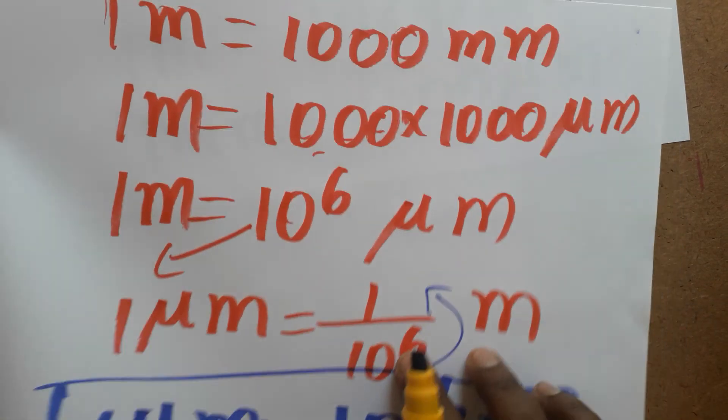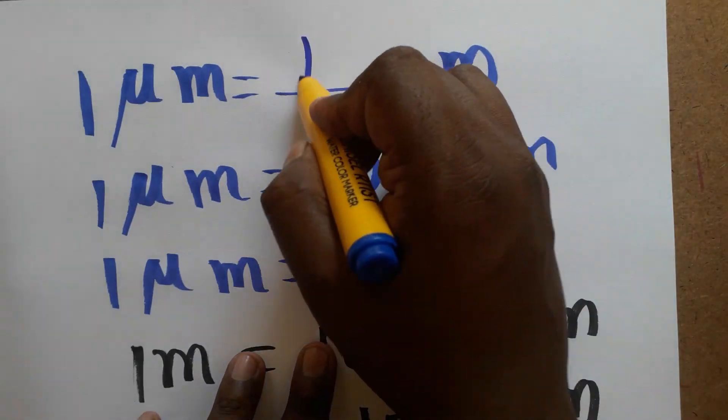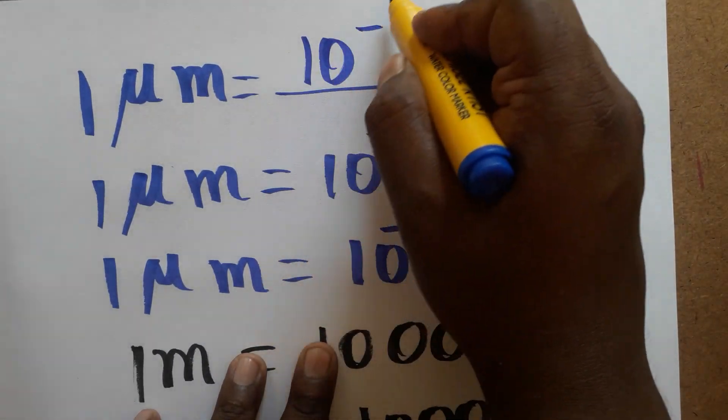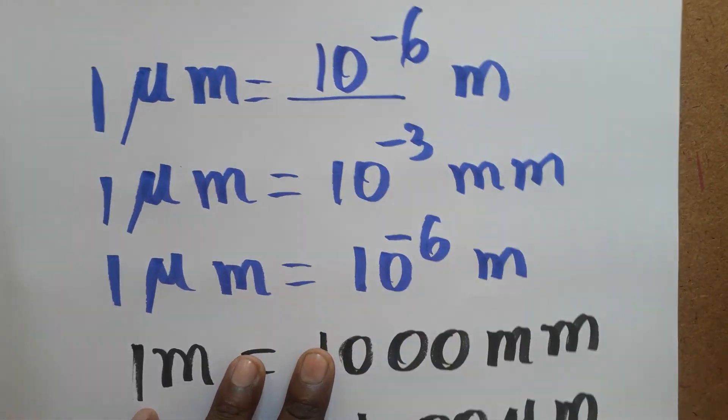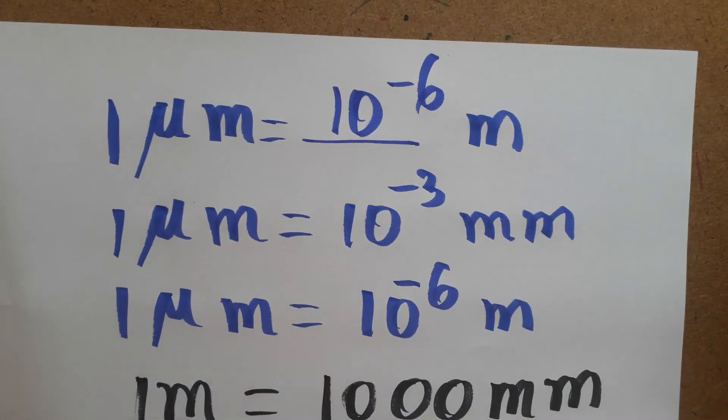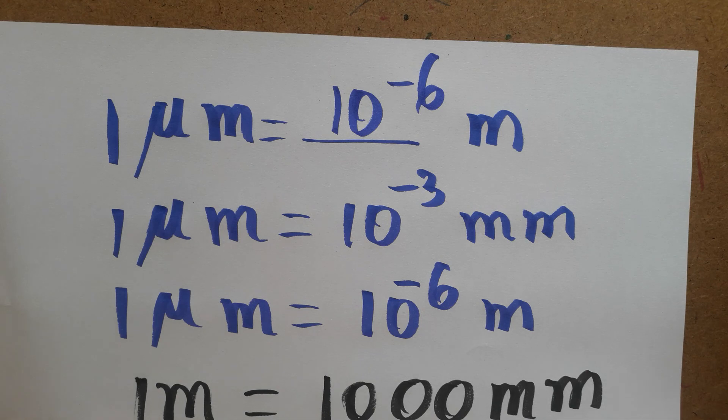So we got 10 power minus 6 meter. Therefore, 1 micrometer is equal to 10 power minus 6 meter. That is the final answer. If you like my channel please subscribe. Thank you.